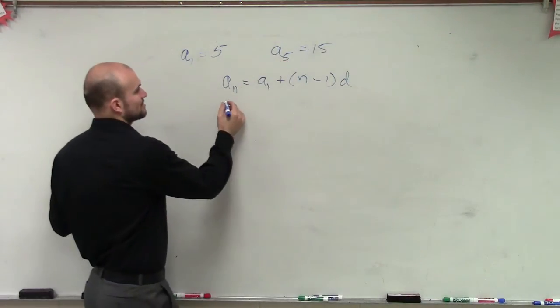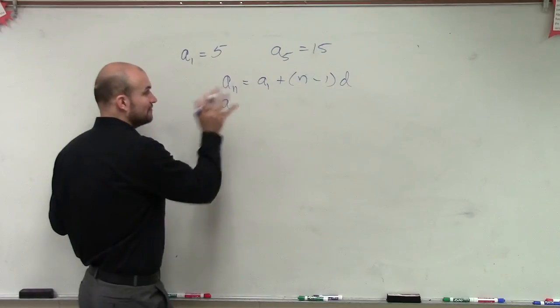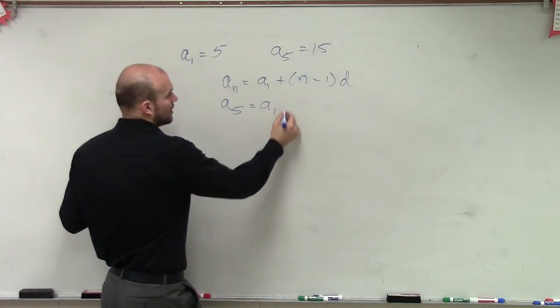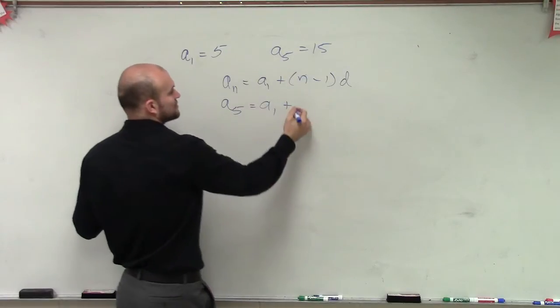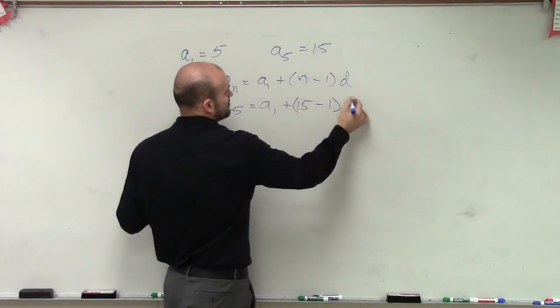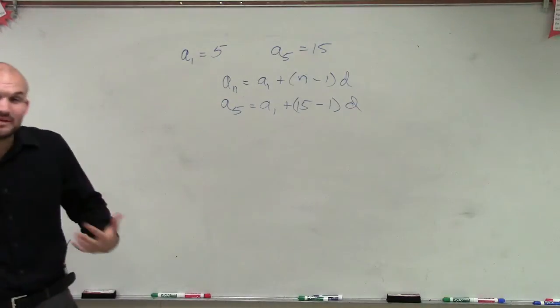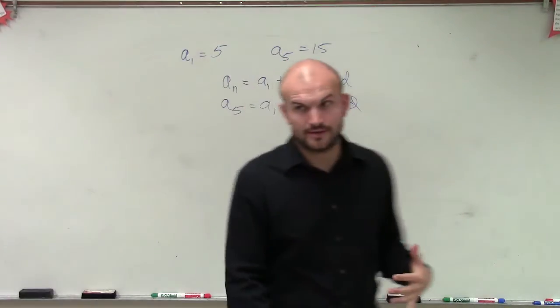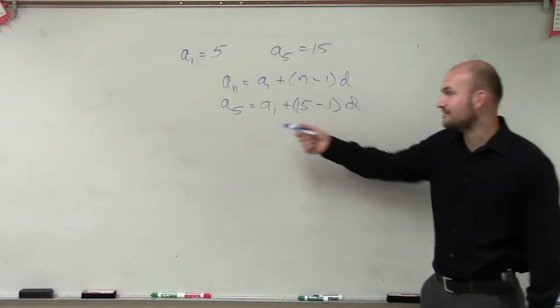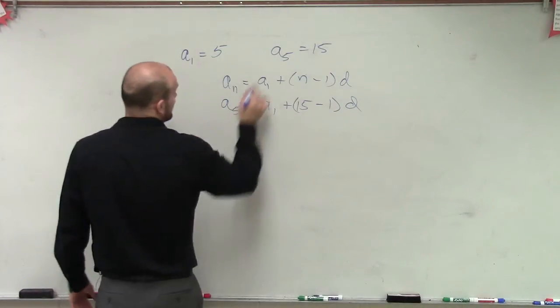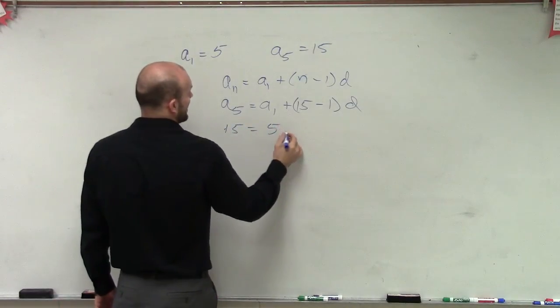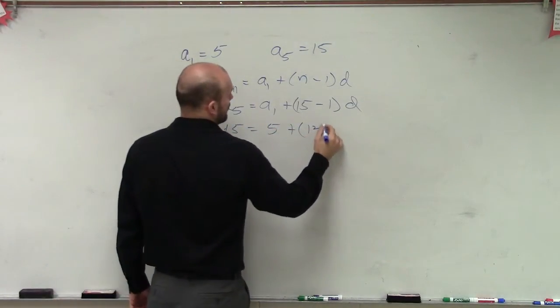So the first thing I'm going to do is to figure out d. Let's say I have a sub 5 equals a sub 1 plus 5 minus 1 times my difference d. So I need to be able to figure out what d is going to be. So now I can plug in my values, which a sub 1 we also know is 5, and a sub 5 is 15. So we have 15 equals 5 plus 4d.